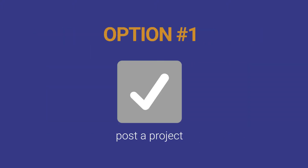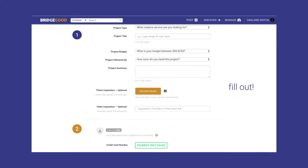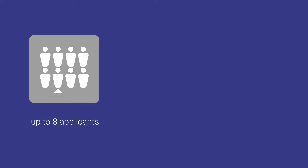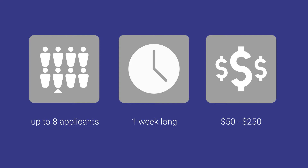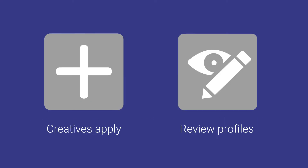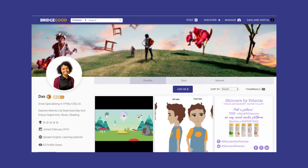Option one: post a project. Click post a project to begin and fill out all info on the form. Once the form is complete, up to eight creatives can apply for projects that take one week, ranging from $50 to $250, decided by you. Once creatives have applied to your project, you may review their portfolios on BridgeGrid and choose the perfect creative for your project.